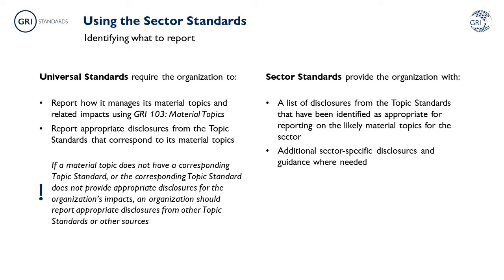In a Sector Standard, for each likely material topic, you can find a section called 'what to report'. Here, you will find a list of disclosures that have been identified as appropriate for reporting on the topic by an organisation in the sector. This list includes disclosures from topic standards, and may also include additional sector-specific disclosures and guidance if needed. Based on the proposed way that sector standards will be applied, an organisation would only use the 'what to report' section for a topic if they have determined that the topic is material.